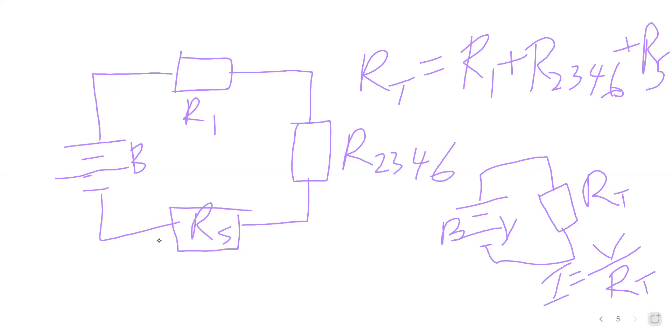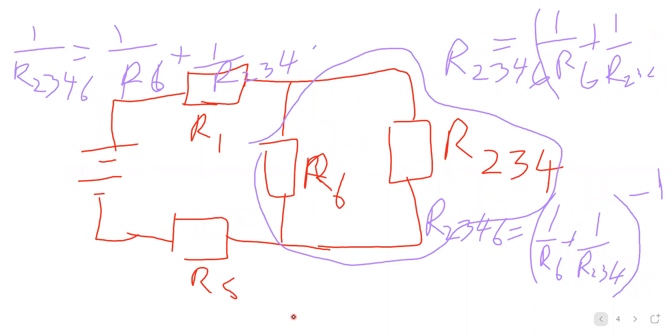The current in this circuit: current I flows out of the battery B through R1, through R2346, and through R5. Let's go to our previous circuit: current I flows out of resistor R1, splits into two, part of it flows through R234, another part flows through R6, and they both merge back to give us current I which will flow through R5.